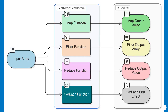Imagine an artist working with a palette of colors. Each color represents a unique element, and the artist's brush is the tool for transformation. In JavaScript, the map function serves as that transformative brush for arrays. With map, you take an original set of data — be it numbers, objects, or strings — and systematically create a new set by applying a consistent operation to every item.